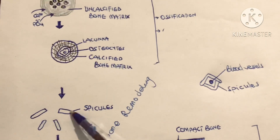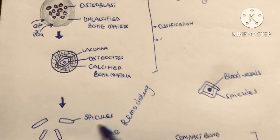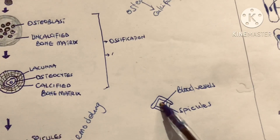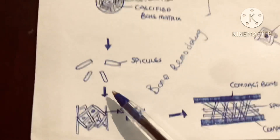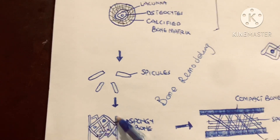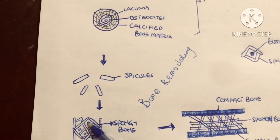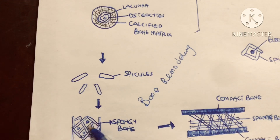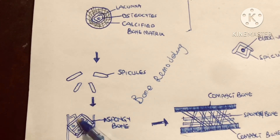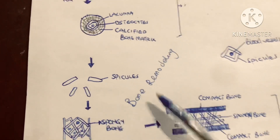These spicules will form around bone vessels, giving them a characteristic structure. This characteristic structure is what we call the spongy bone — there are spaces and the spaces contain blood vessels. These structures are called trabeculae, and this represents the spongy bone.